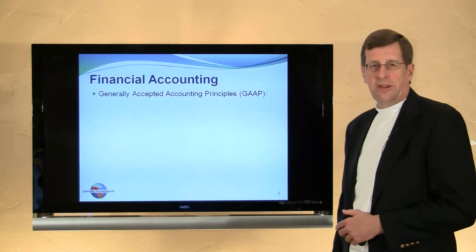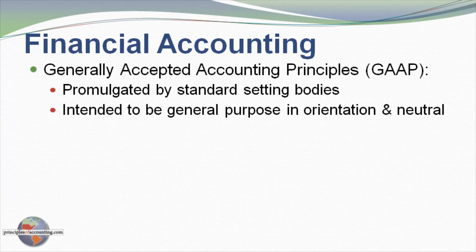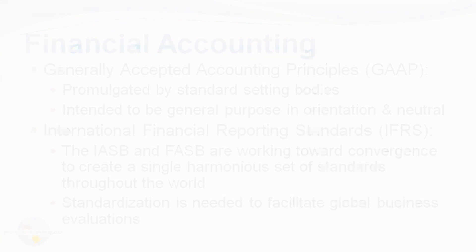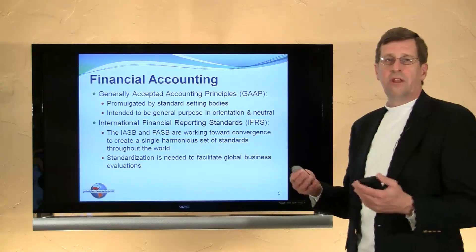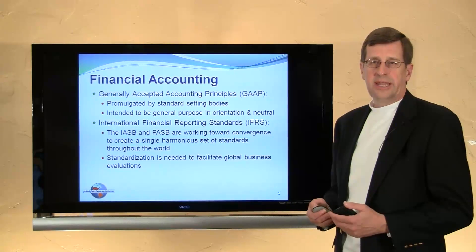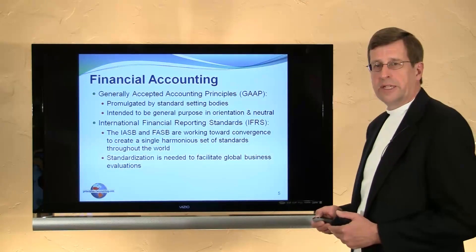The FASB's global counterpart is the International Accounting Standards Board. The rules, practices, and procedures that define accepted accounting practices are simply called generally accepted accounting principles, or GAAP. On a global basis we refer to this as International Financial Reporting Standards, or IFRS. The IASB and the FASB are working on a project of global convergence that will lead to harmonization of accounting standards, and perhaps even the unification of the standard-setting bodies into a single body at some uncertain future date. Standardization is very much needed in this age of global exchange and investment.